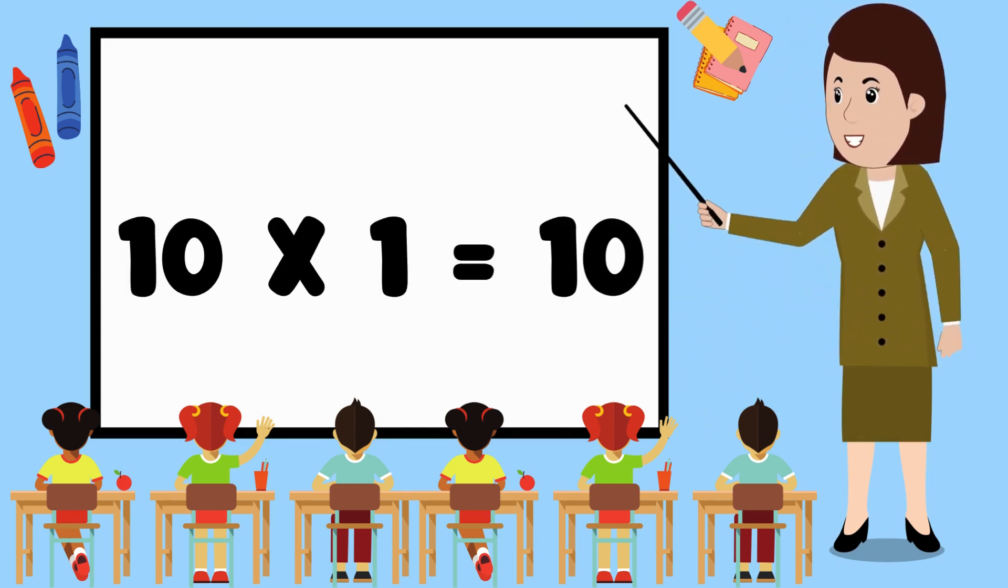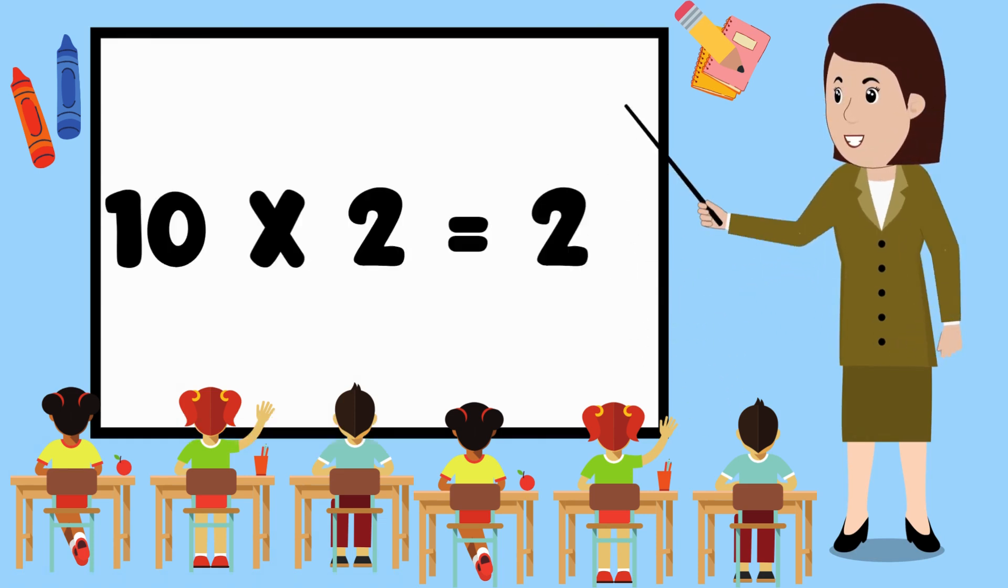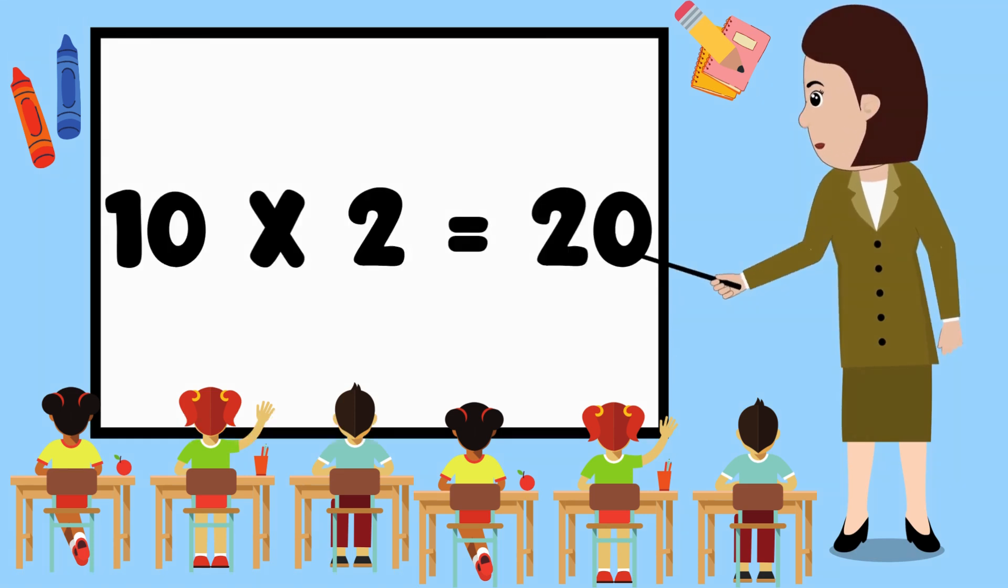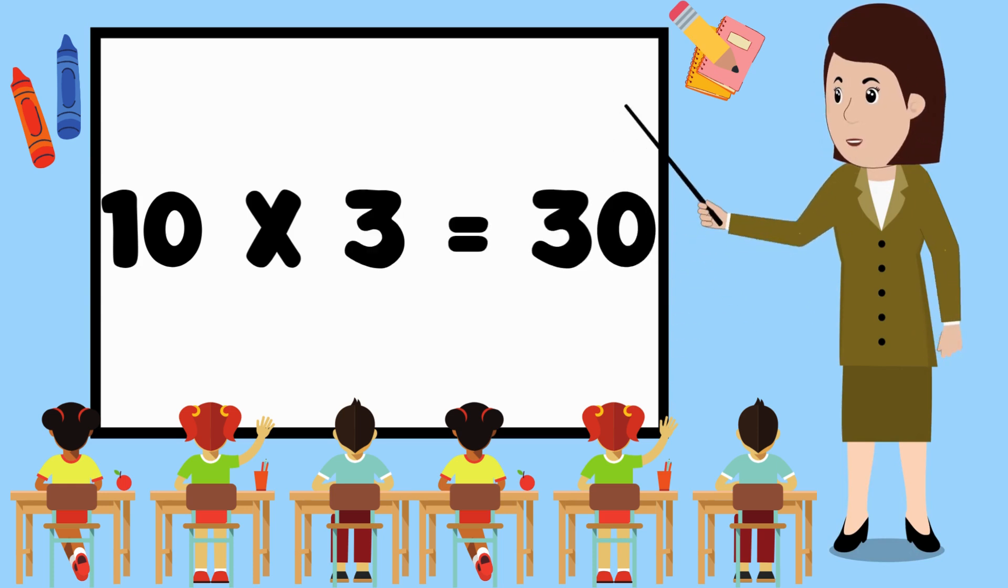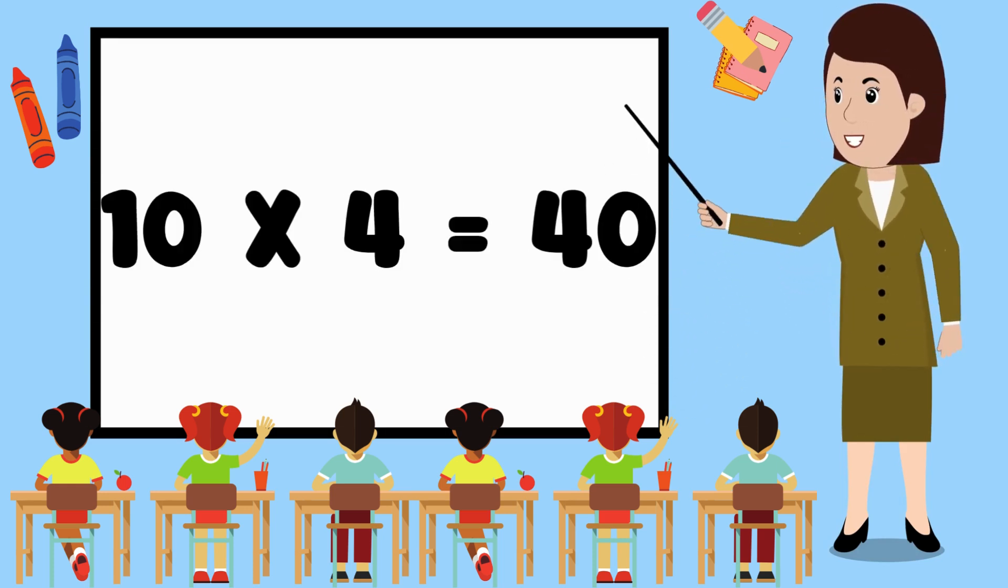10 ones are 10. 10 ones are 10. 10 twos are 20. 10 twos are 20. 10 threes are 30. 10 threes are 30. 10 fours are 40.